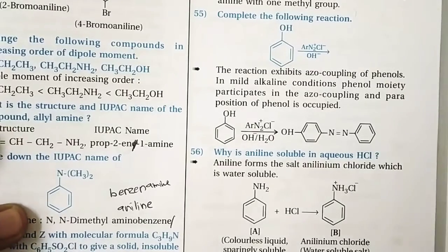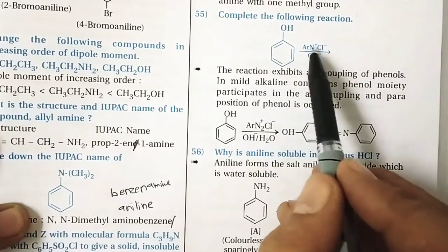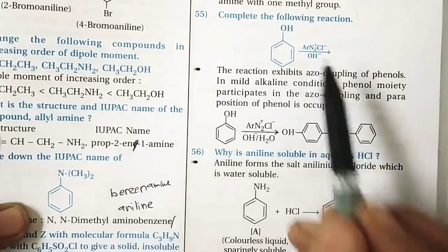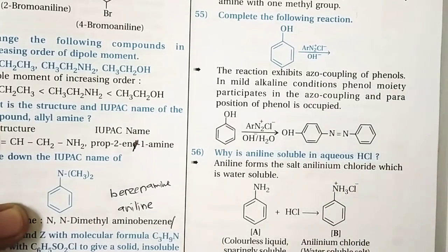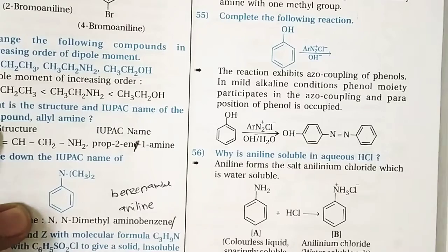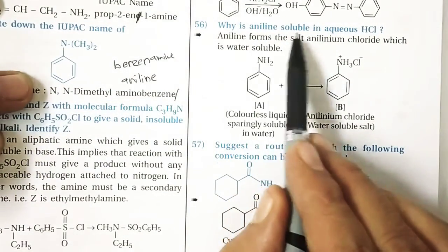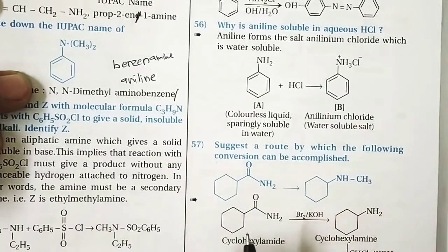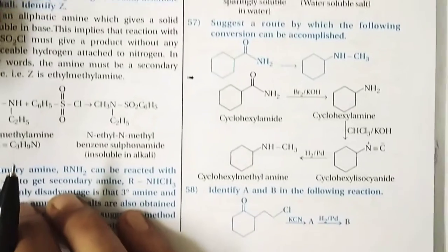Question 55: Complete the following reactions. Phenol reacts with benzene diazonium chloride (BDC) via electrophilic substitution (coupling reaction) to form para-hydroxyazobenzene as the azo dye. Question 56: Aniline reacts with HCl to form anilinium chloride, which is water-soluble.